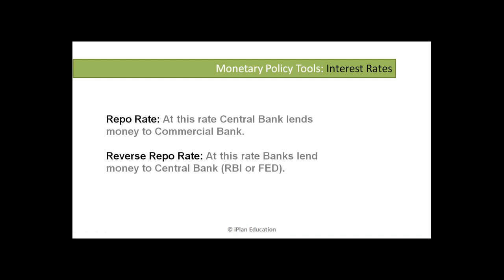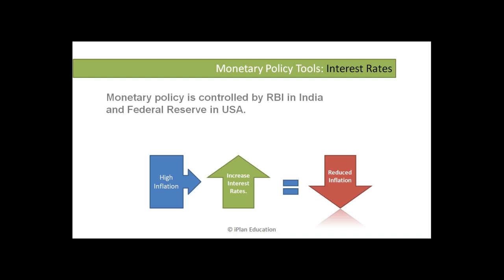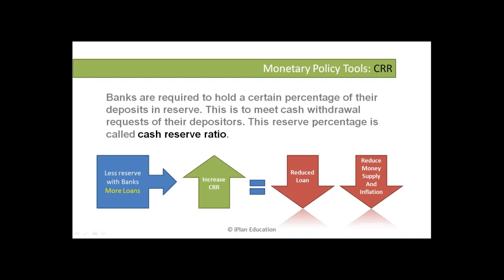After interest rates, the second tool for the central bank to control inflation is the Cash Reserve Ratio (CRR). Banks are required to hold a certain percentage of their deposits in the most liquid form — that means cash — to meet the cash withdrawal requests of their depositors, otherwise there would be a default. These reserve percentages are known as the Cash Reserve Ratio. If you increase the CRR, more funds remain with the bank in liquid form, this does not go into the system, and that reduces the money supply and controls inflation.